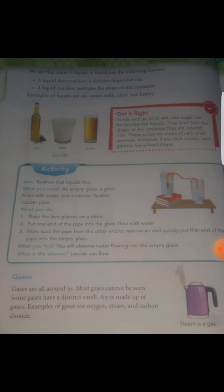Next are gases. Gases are also matter. They are all around us, but we cannot see them. We can understand gases through other senses — like when we open our house and smell something, we can identify there is a gas. Air is made up of different gases like oxygen, carbon dioxide, argon, and steam — these gases are present in the atmosphere.